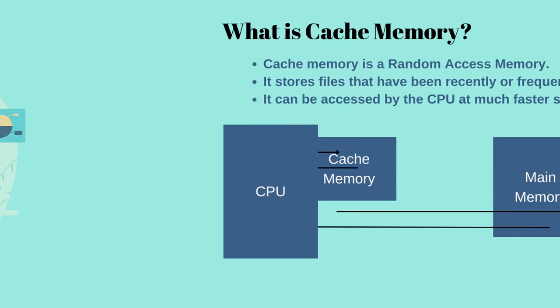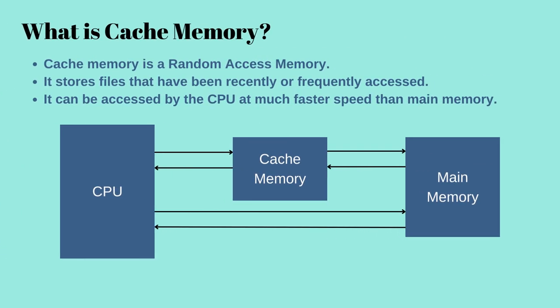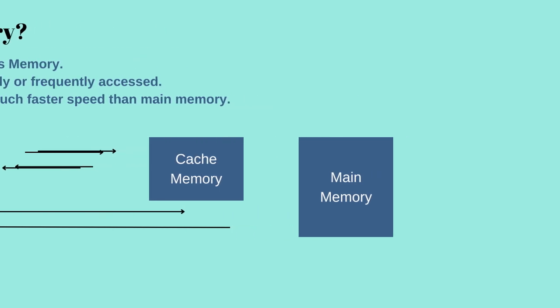So let's begin with what is Cache Memory. Cache Memory is very high speed memory. It facilitates the transfer of data between the processor and the main memory at the speed which matches the speed of the processor. The cache is a smaller and fast memory that stores copies of the data from frequently used main memory locations. For example, if you open and then close Microsoft Word and then open it again after a while, it will take less time to open because it was retrieved from cache memory.